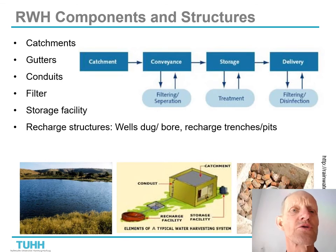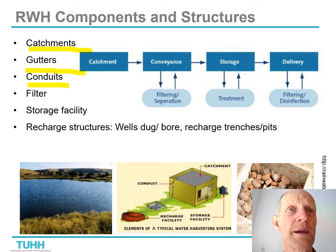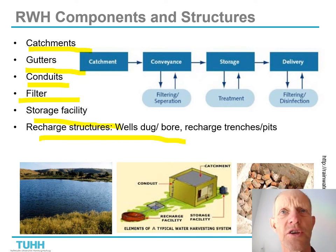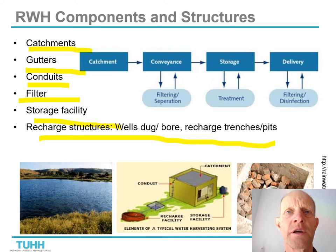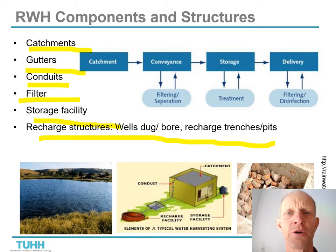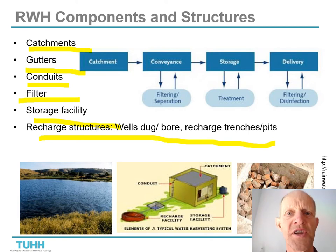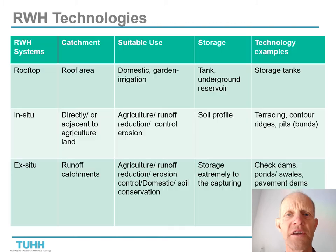Rainwater harvesting components and structures: we have catchments, gutters, conduits, pipes, filters, storage facilities, and recharge structures. Groundwater recharge is one of the strongholds of rainwater harvesting, because groundwater is a key resource for long-term water stability. While a storage tank can cover a few weeks or maybe a month, replenishing and raising the groundwater table significantly has brought villages through two to three years without any rainfall, as has happened in Gujarat in western India.